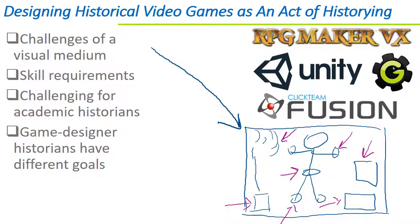So it's a challenge for academic historians and history students to design video games as works of history, and unsurprisingly, examples of such work are pretty scarce. Of course, game designer historians do this all the time — they do history through their video games. But they have a different ranking of goals generally than your academic or student historian. Entertainment, appeal, and engagement tend to come before authoritative historical interpretation. So designing historical video games, while certainly an act of historying, presents a real challenge to student and academic designers.